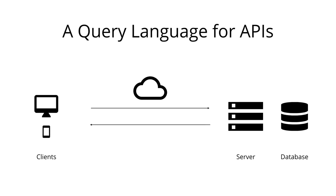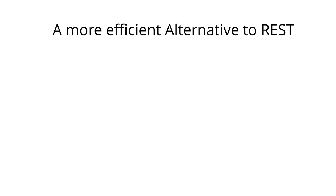Before we dive deeper into the technical details in the next chapter, let's understand a bit of the historic context in which the concept of REST was developed. REST has been a popular way to expose data from a server. When the concept of REST APIs was developed, client applications were relatively simple and the development speed wasn't nearly where it is today. REST thus was a good fit for many applications.